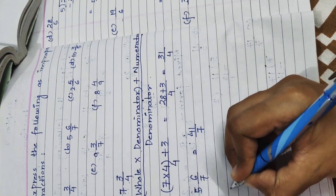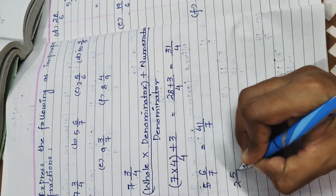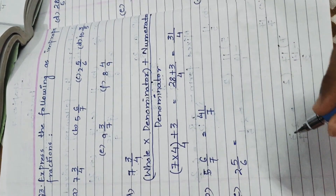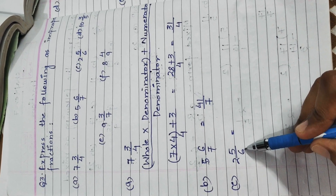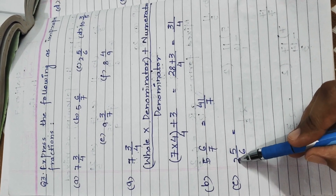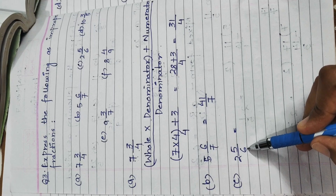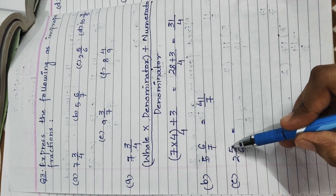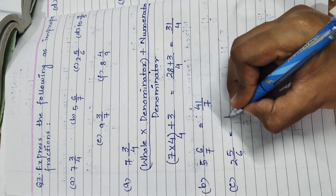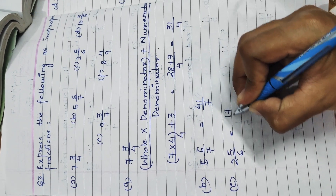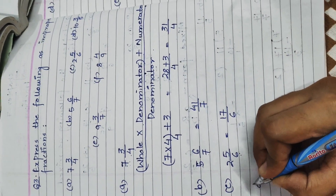Part C is 2 whole 5 upon 6. Whole multiplied by denominator: 2 × 6 = 12, plus numerator 5: 12 + 5 = 17. The answer is 17 upon 6.